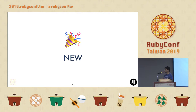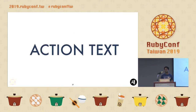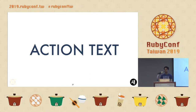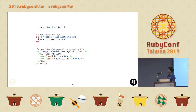Next up on the newer things is a new component called Action Text. How many of you have heard of the Trix editor? If you have used rich text fields in your applications where you want to provide editors, Trix is one of those editors, again built by Basecamp. It allows you to have rich content and rich text editing, which now can also be done from Rails itself.